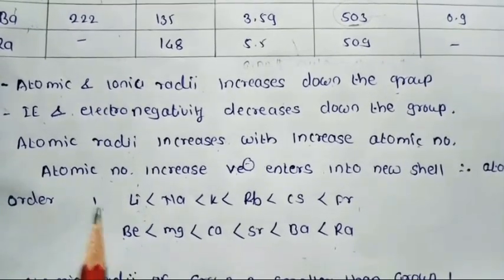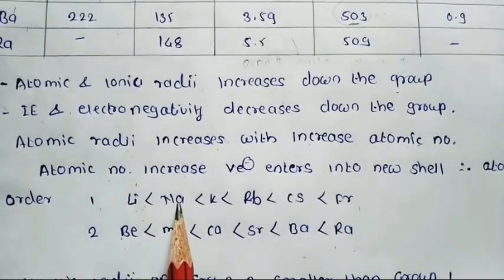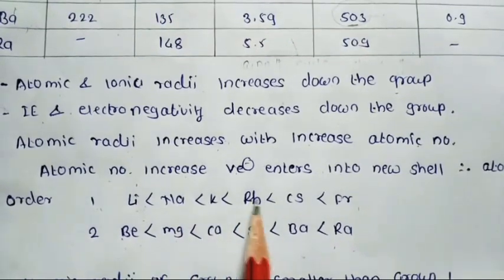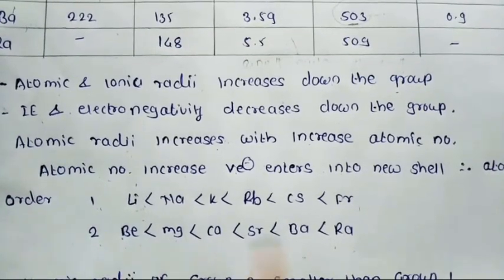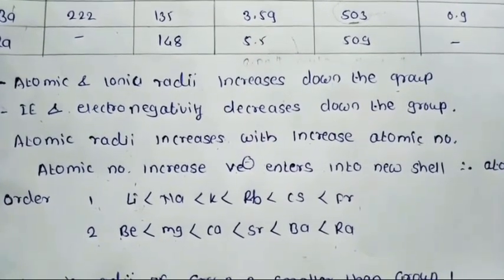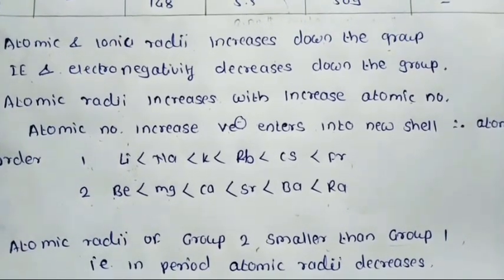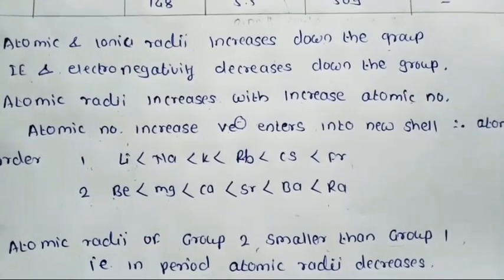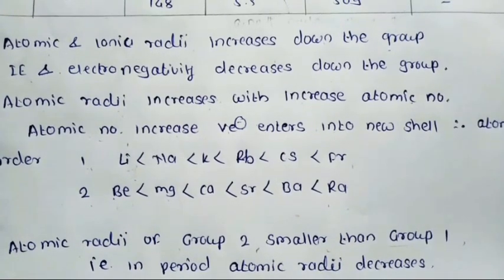The atomic radius of group 2 (alkaline earth metals) is smaller than that of group 1 in the same period. In a group, atomic radius increases down. But in a period, atomic radius decreases. For example, sodium's atomic radius is 186 pm, while magnesium's atomic radius is 160 pm, and they are in the same period.